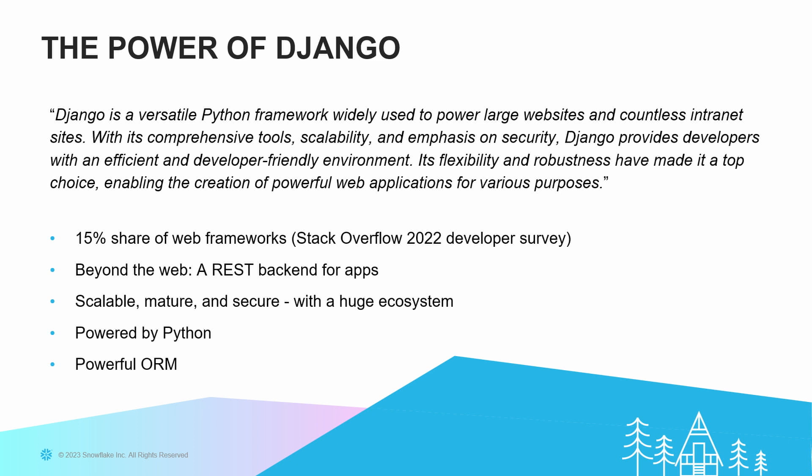If you go to the Stack Overflow survey, 15% of the web frameworks in that survey are using Django. It's also a great REST backend if you need one for connecting more APIs to Snowflake. It's powered by Python — we love that — and the ORM is super cool too. Just to give you an idea of how big Django can be: when Instagram started years ago, they built Instagram on Django. And they're still using Django as their main backend, continually making improvements for their use case.